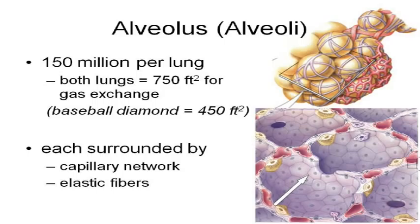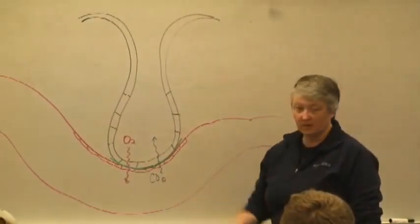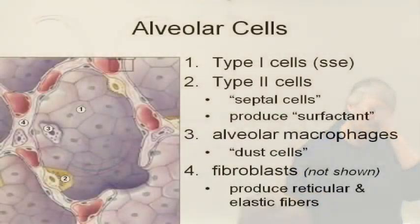That's what I've demonstrated or drawn here. This would be one alveolus, this would be the capillary. Oxygen diffuses from the space inside the alveolus to the capillary, carbon dioxide to the alveolus. There's called the basal lamina or basement membrane - it's a protein that basically fuses the wall of the capillary to the wall of the alveolus.